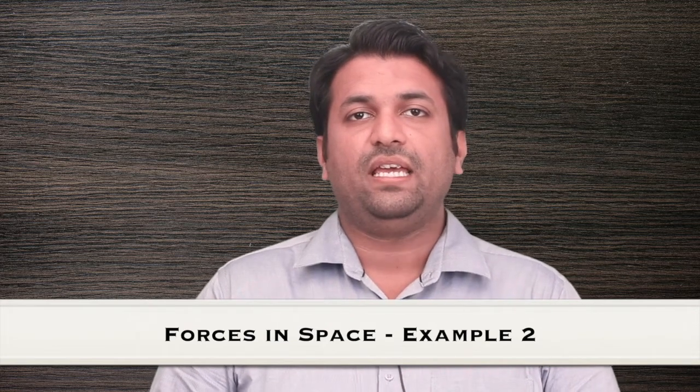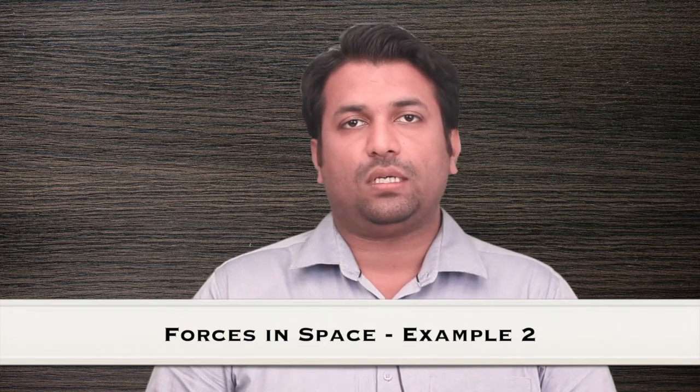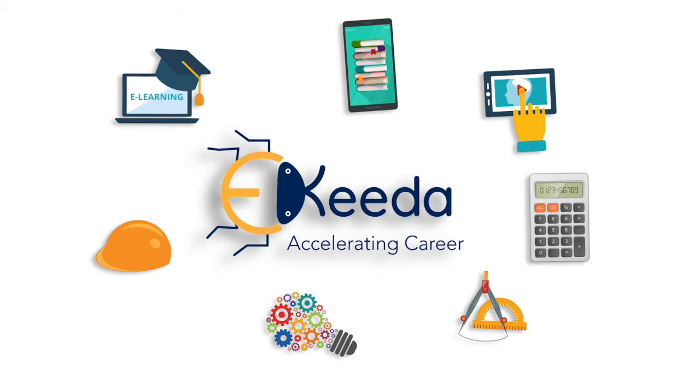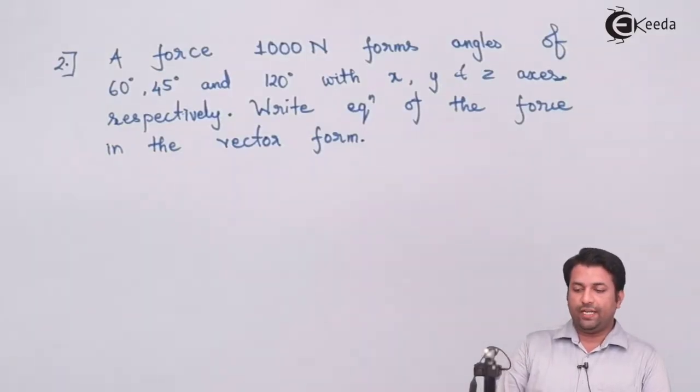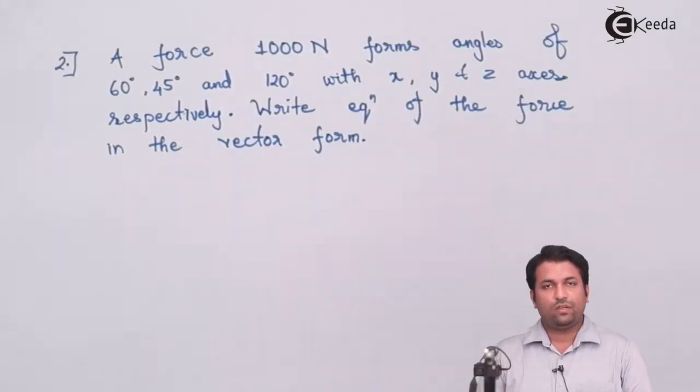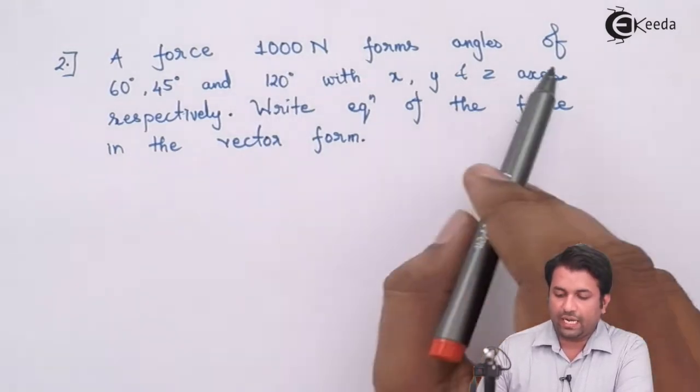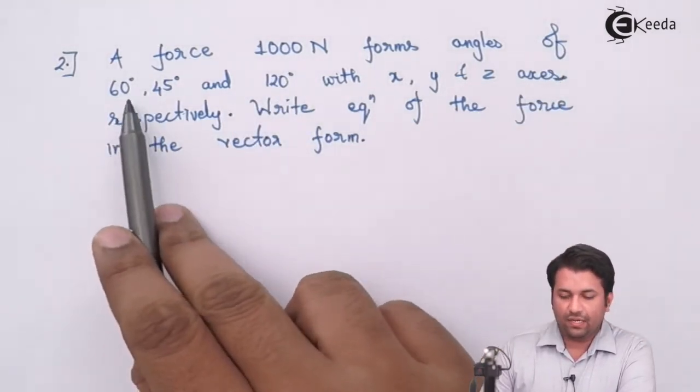In this we'll see what if the angles are given to us. Here is a question that is given to us: we know the force magnitude as 1000 Newton and it is forming an angle of 60 degrees, 45 degrees, and 120 degrees with X, Y, and Z axes respectively.